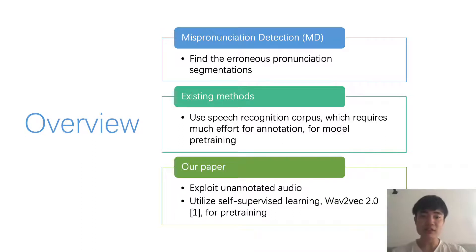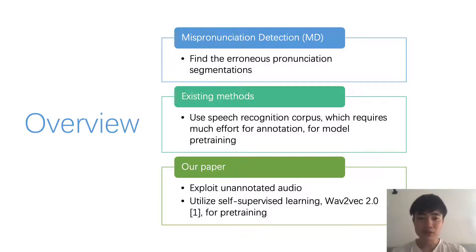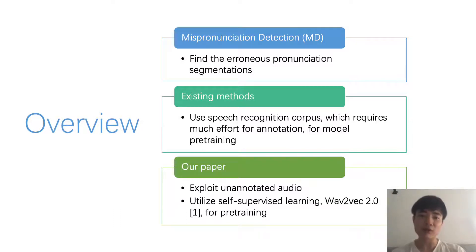Mispronunciation detection is: given speech, we want to find the incorrect pronunciation segments. For instance, someone reads a text and the system tells whether their pronunciation is correct or not for each phoneme.